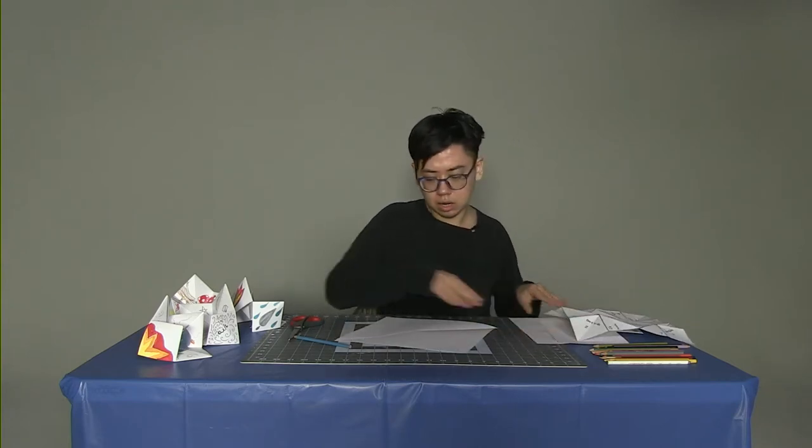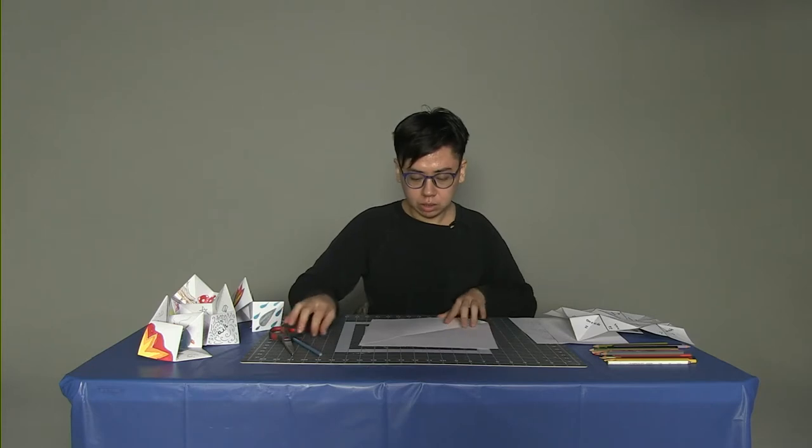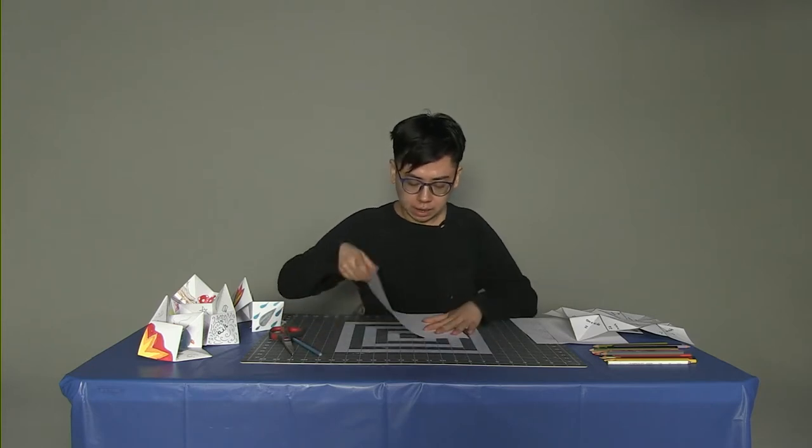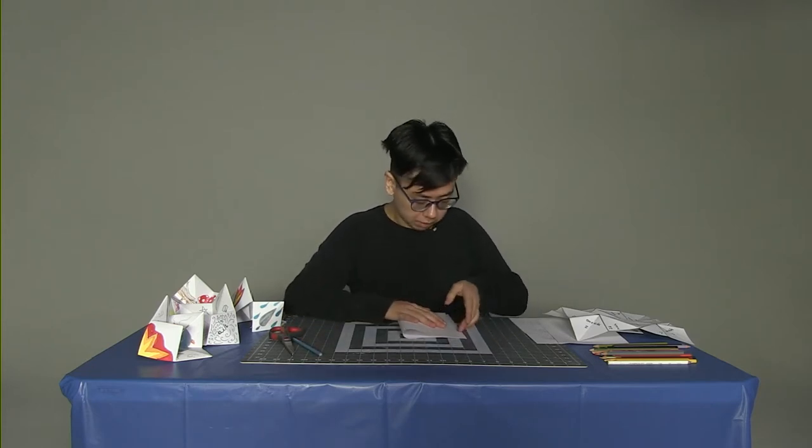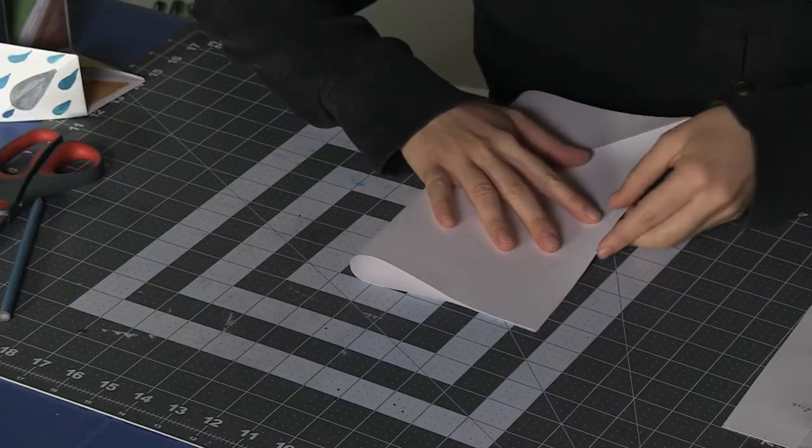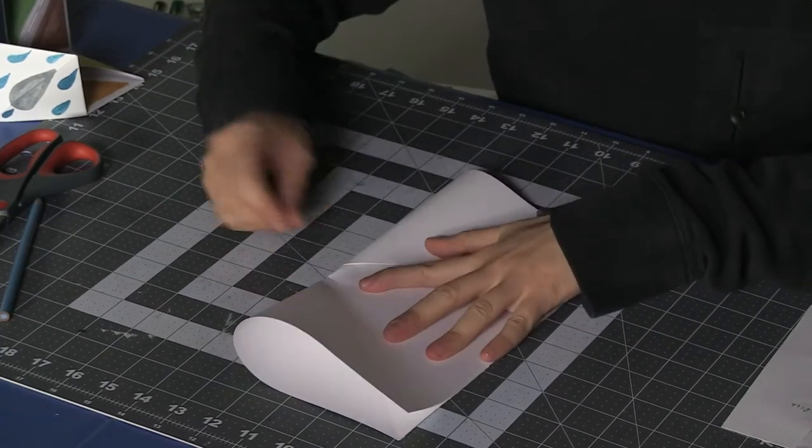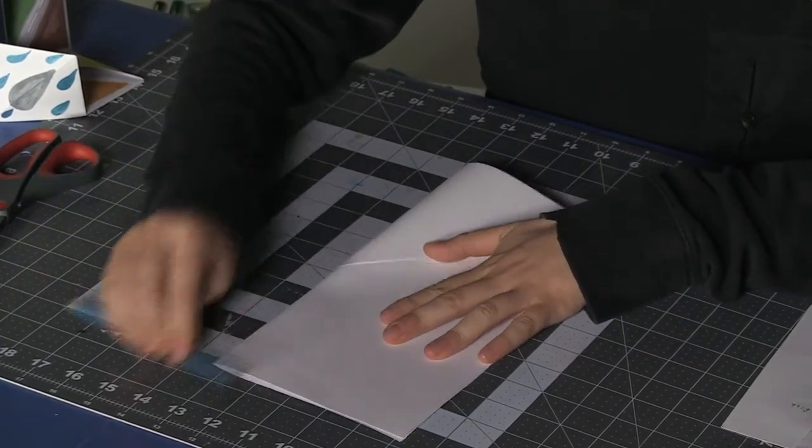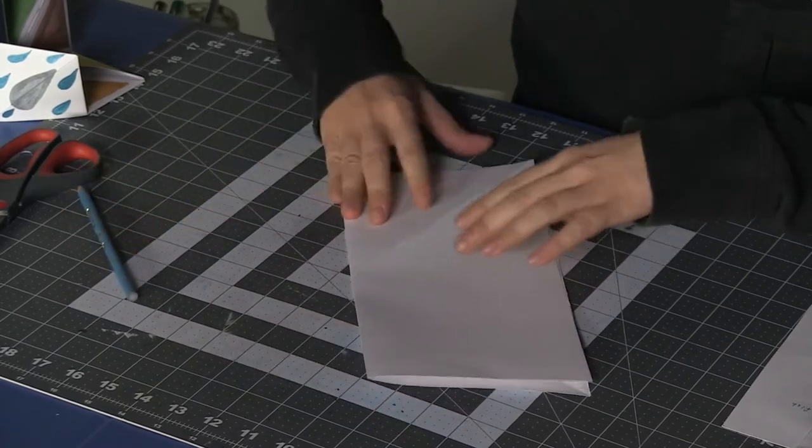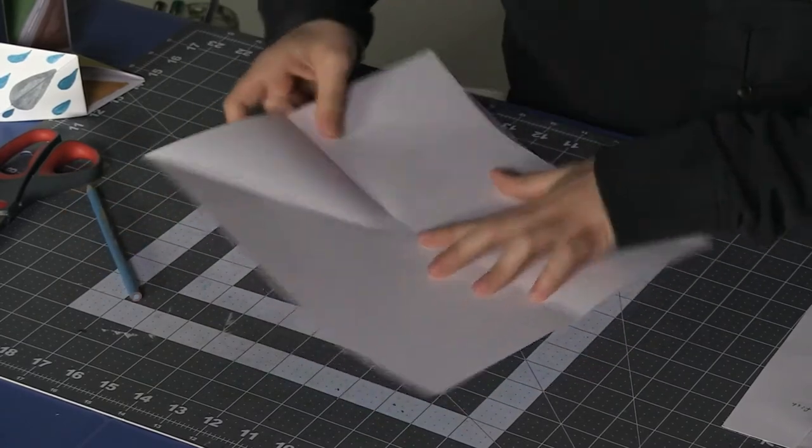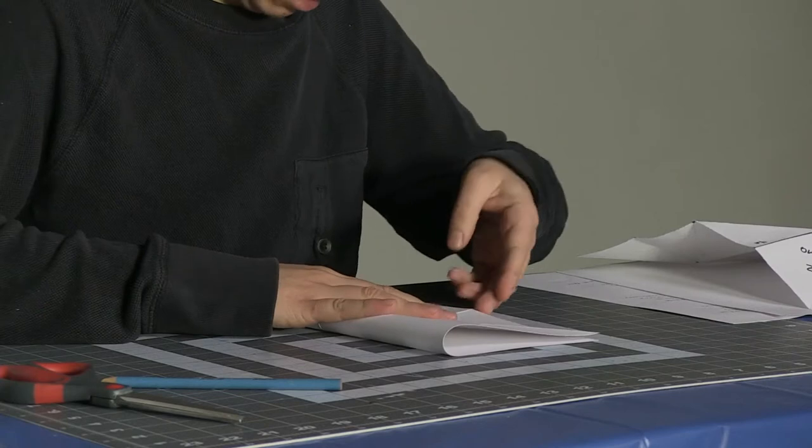To make our fortune teller what I do is I start by folding the paper in half and in half again the other way.